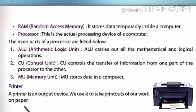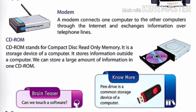This was all about CPU. Now we will learn about another device. Printer is also an output device. We use a printer for taking printouts on a piece of paper, which is also called a hard copy. The next is modem — M-O-D-E-M. A modem connects one computer to other computers through the internet and exchanges information over telephone lines.